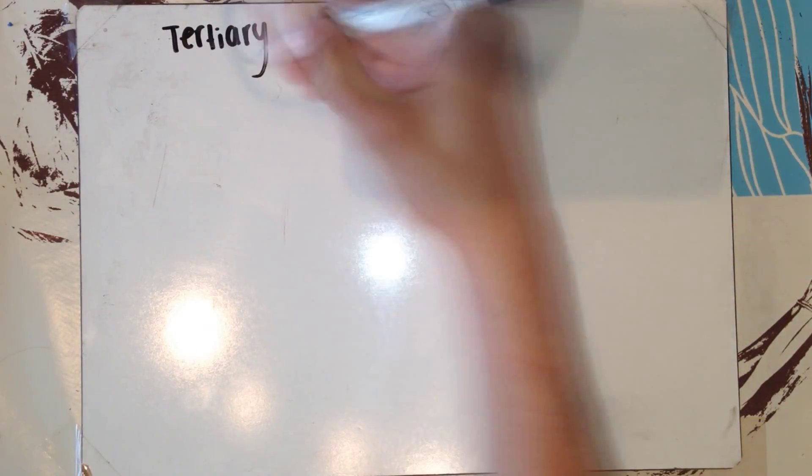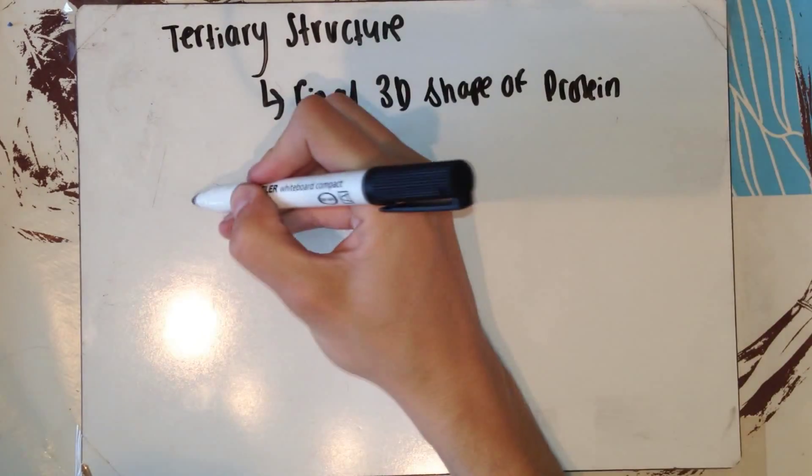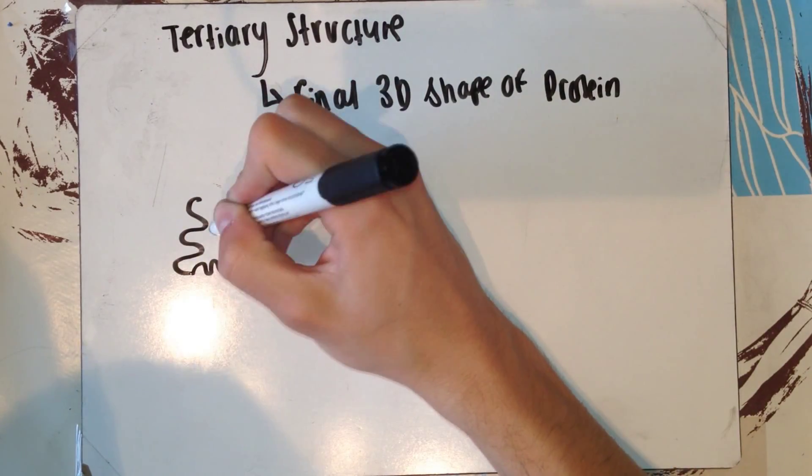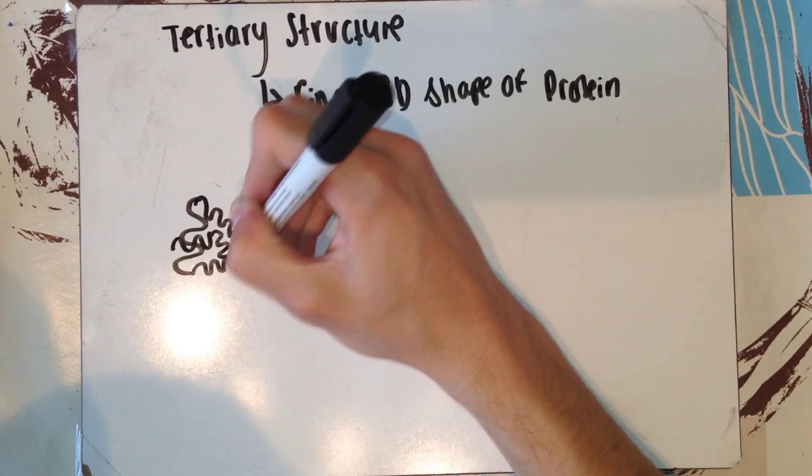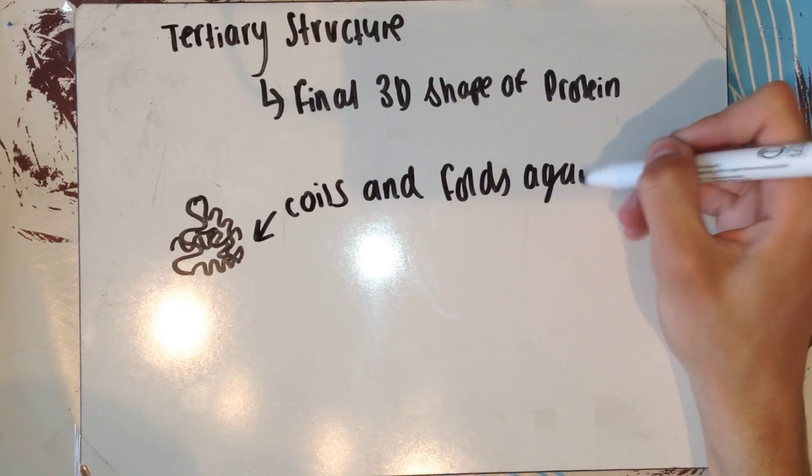Now, I'm going to quickly go over the tertiary structure. Tertiary structure is essentially the final 3D shape of the protein. This diagram here shows how the coils and twists of the secondary structure once again coil and twist to form the tertiary structure, the final 3D shape.